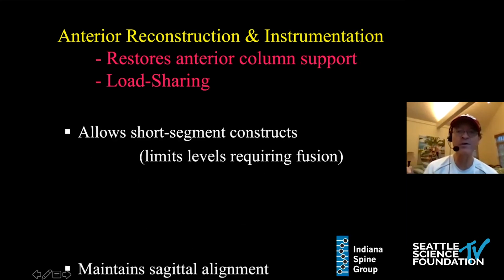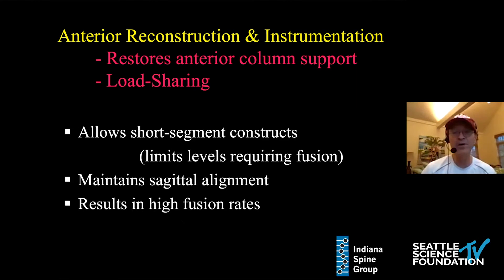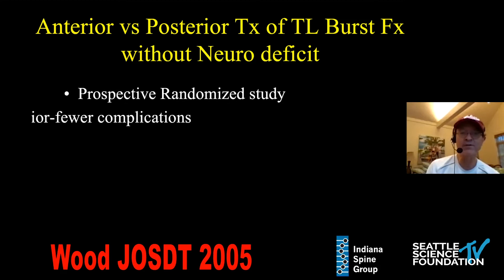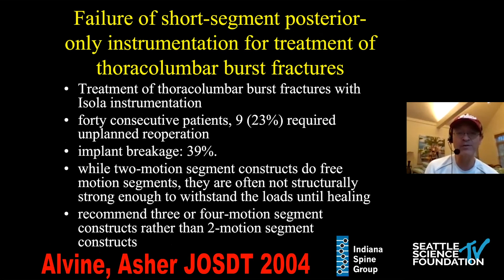Anterior-only allows a short-segment construct, limiting the normal areas that need to be fused — unlike a posterior approach. John showed a very nice operation, but it involved multiple normal segments in the fusion mass. We also did a study looking at sagittal alignment, and we were able to restore and maintain sagittal alignment better with an anterior-only construct compared to a posterior-only construct, with a very high fusion rate. Kirk Wood also showed the same thing in a prospective randomized study comparing anterior versus posterior operations for burst fractures: anterior operations had fewer complications, better sagittal alignment, and less pain. Posterior short-segment constructs have a very high rate of failure.